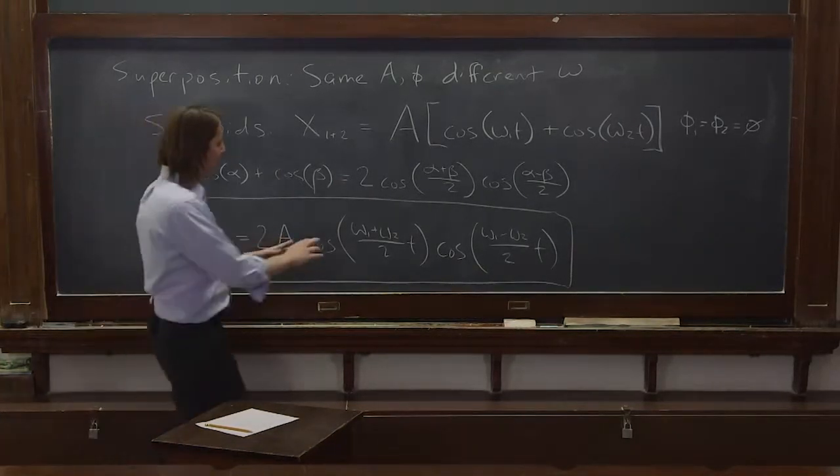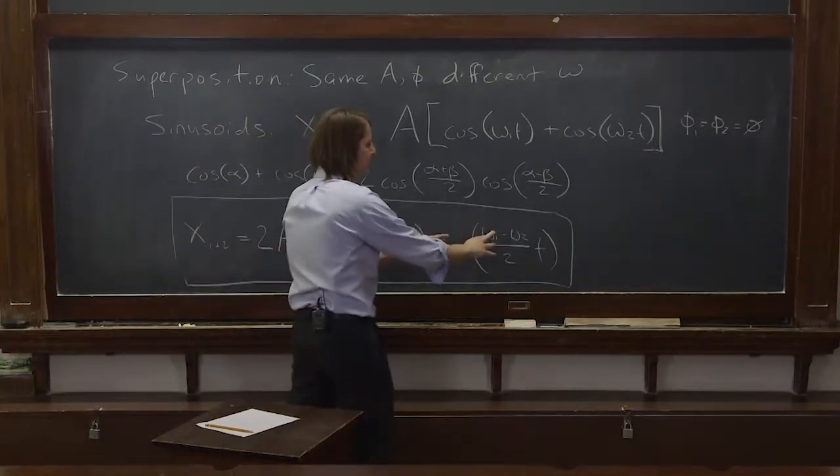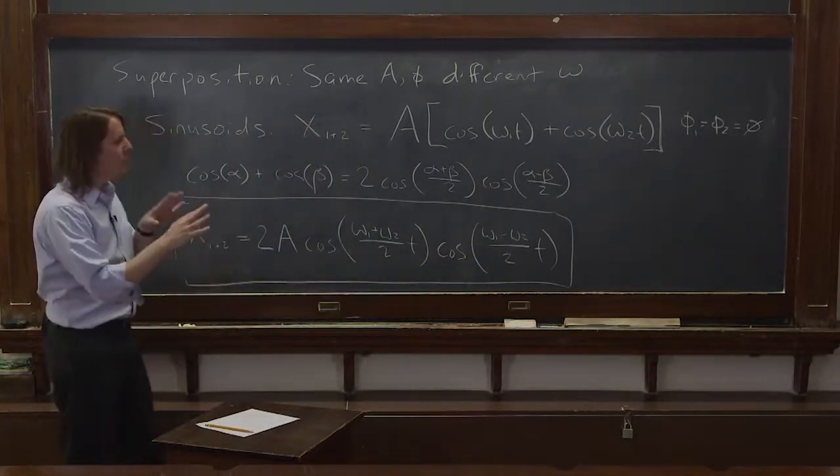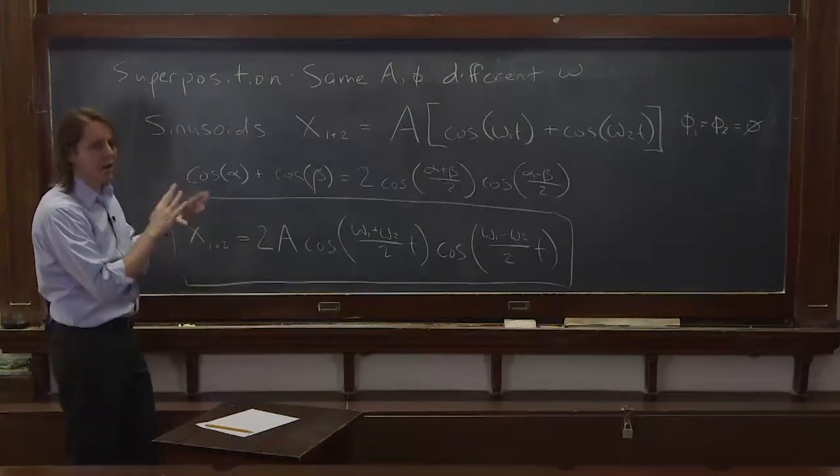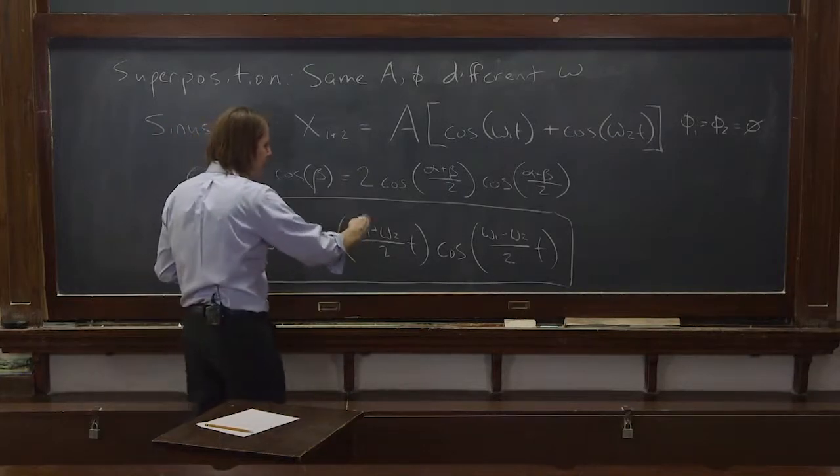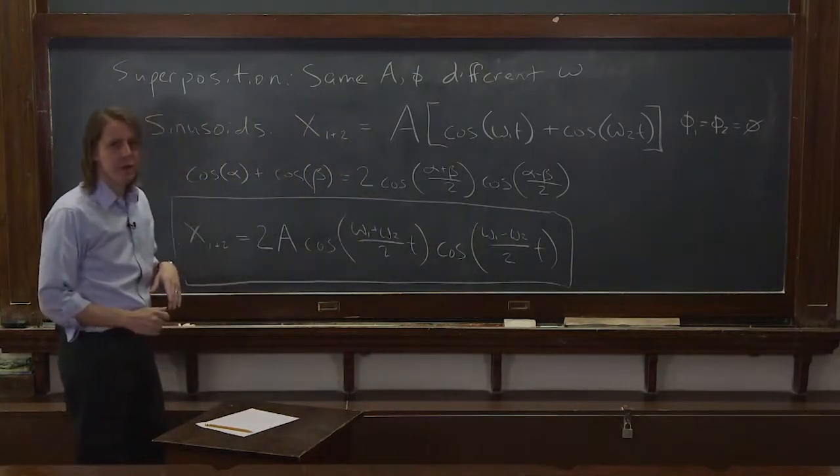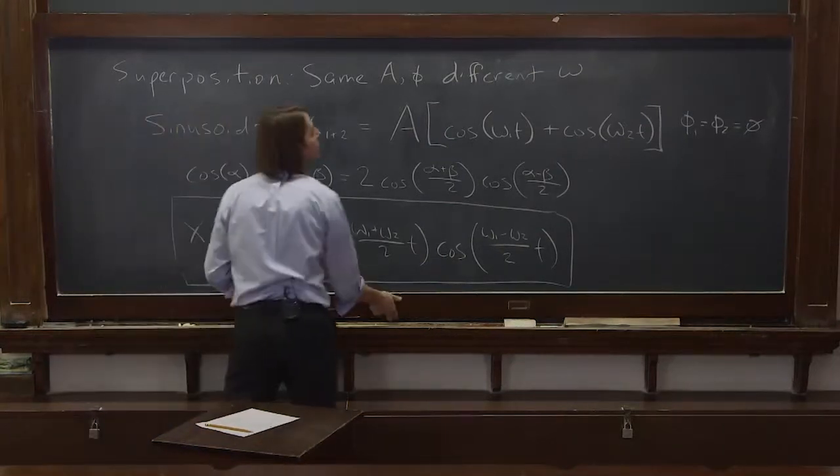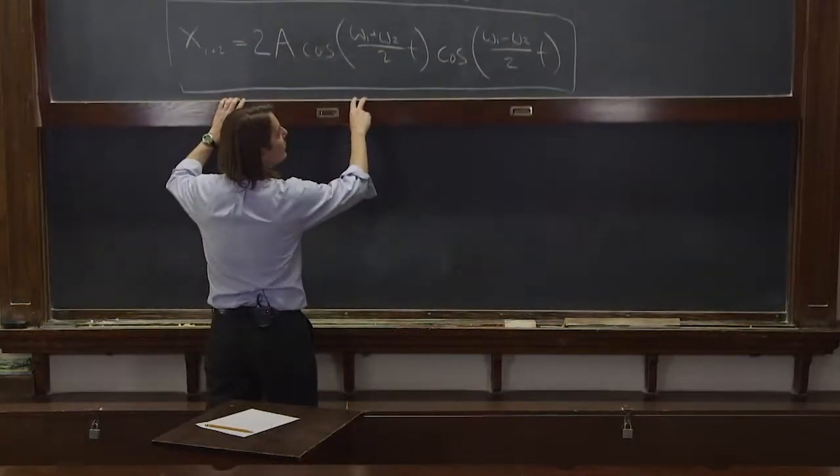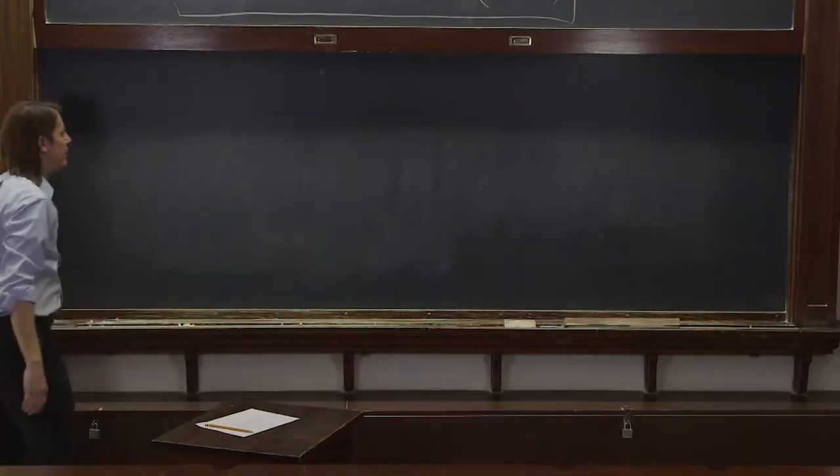You could think about now, we can think of this as one sinusoid modulated by another sinusoid. Because if the frequencies are kind of close and they're kind of high, this creates a pattern called beats. You have a fast frequency signal modulated by a slow frequency envelope. So let me show you what that looks like and show you how it really does make sense.